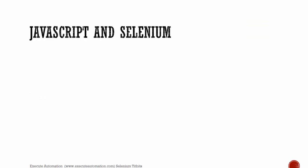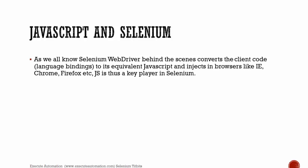How are JavaScript and Selenium related? Selenium WebDriver behind the scenes converts the client code — the language bindings — whether written in C#, Java, Python, Ruby, or any other language, into JavaScript. This JavaScript is then injected into browsers like IE, Chrome, and Firefox. So Selenium and JavaScript are pretty much tightly coupled.